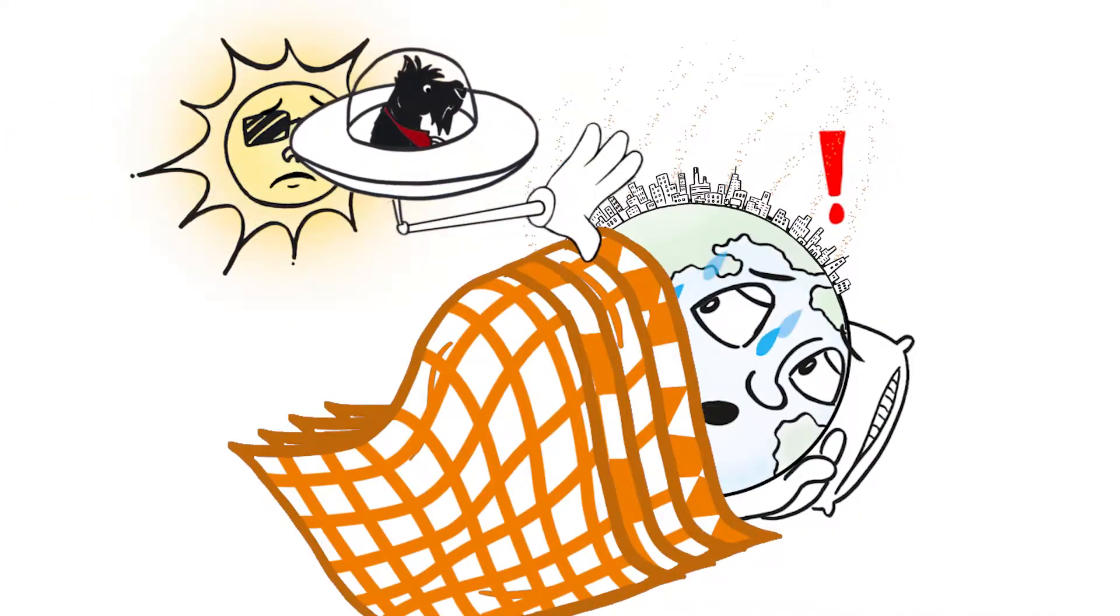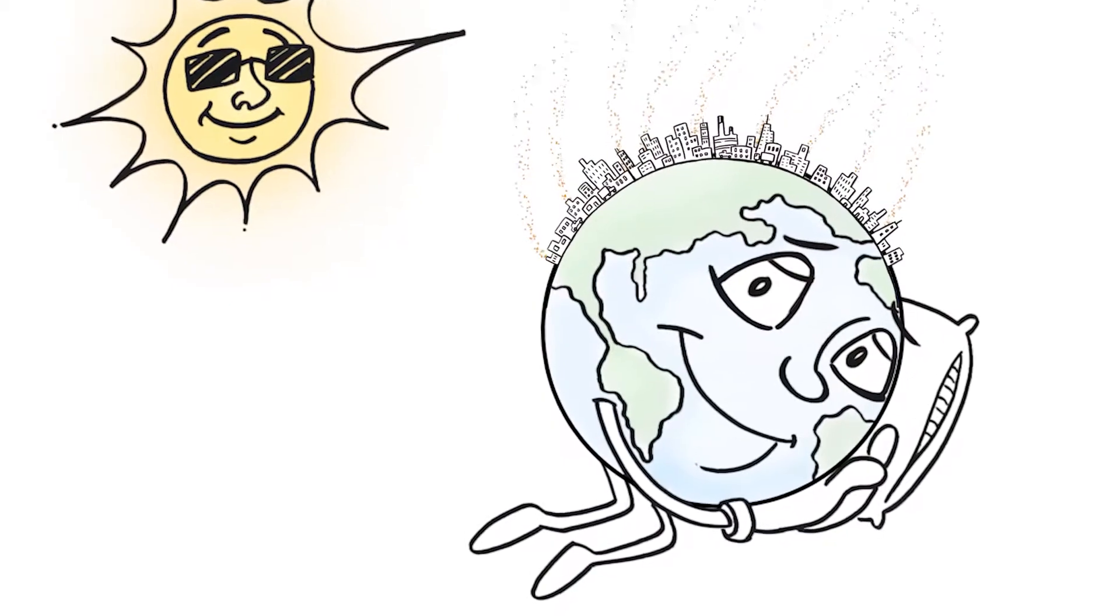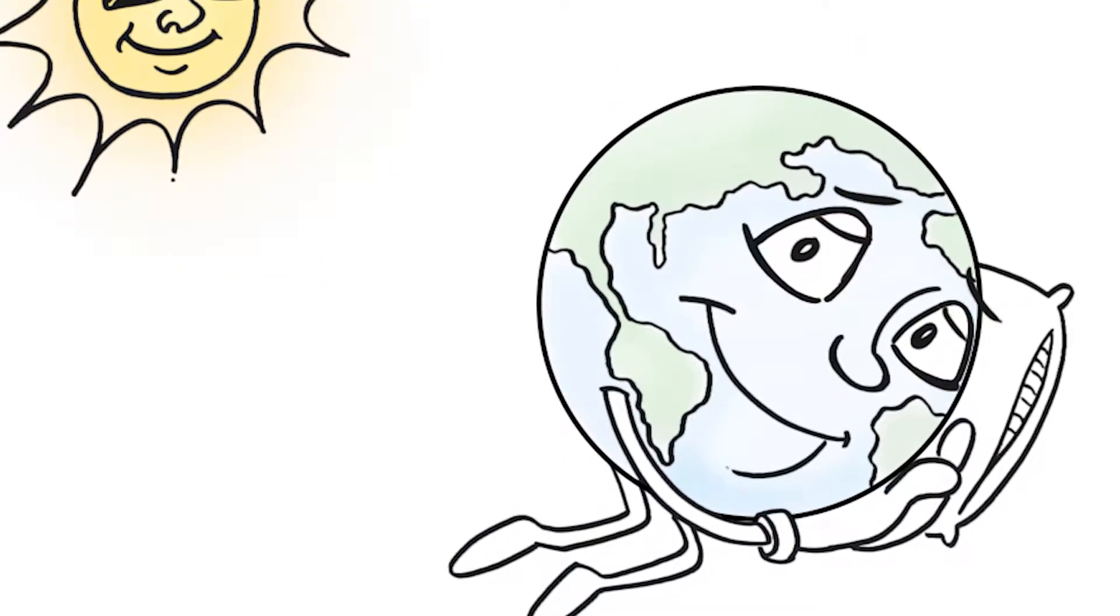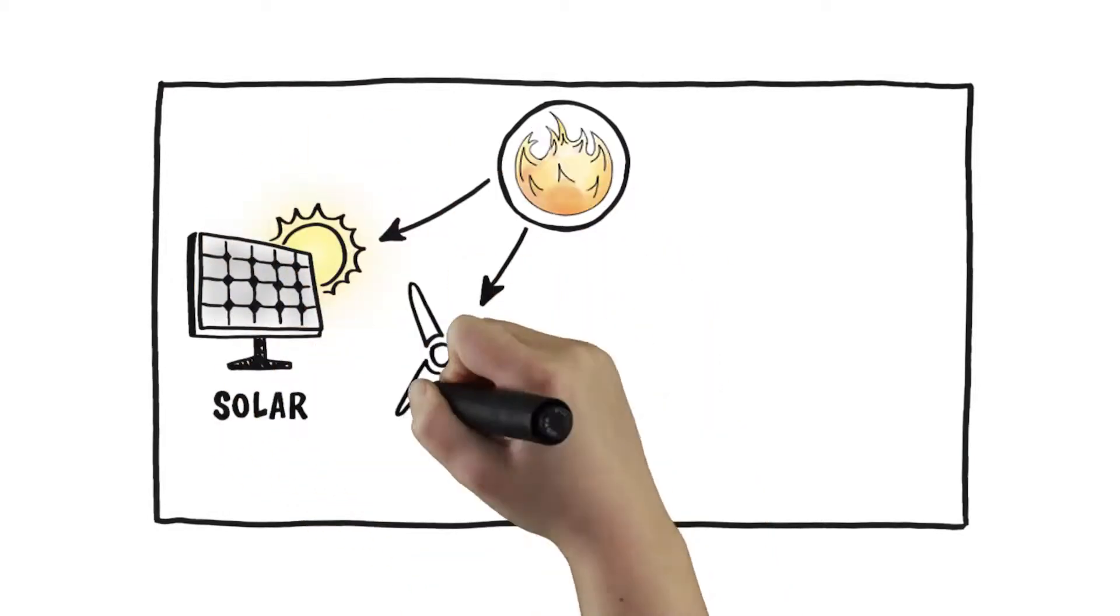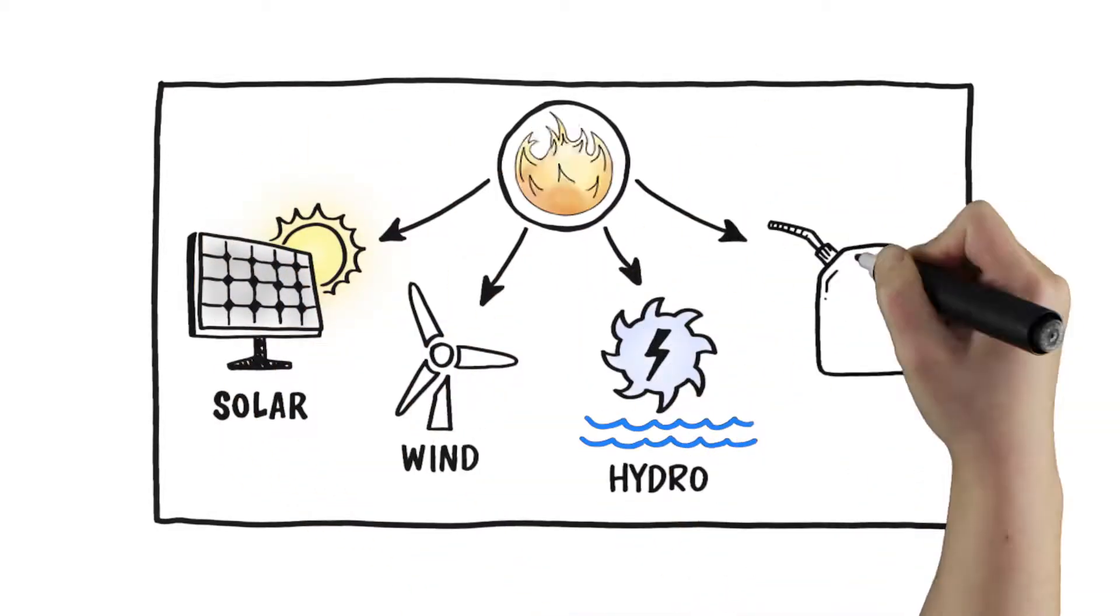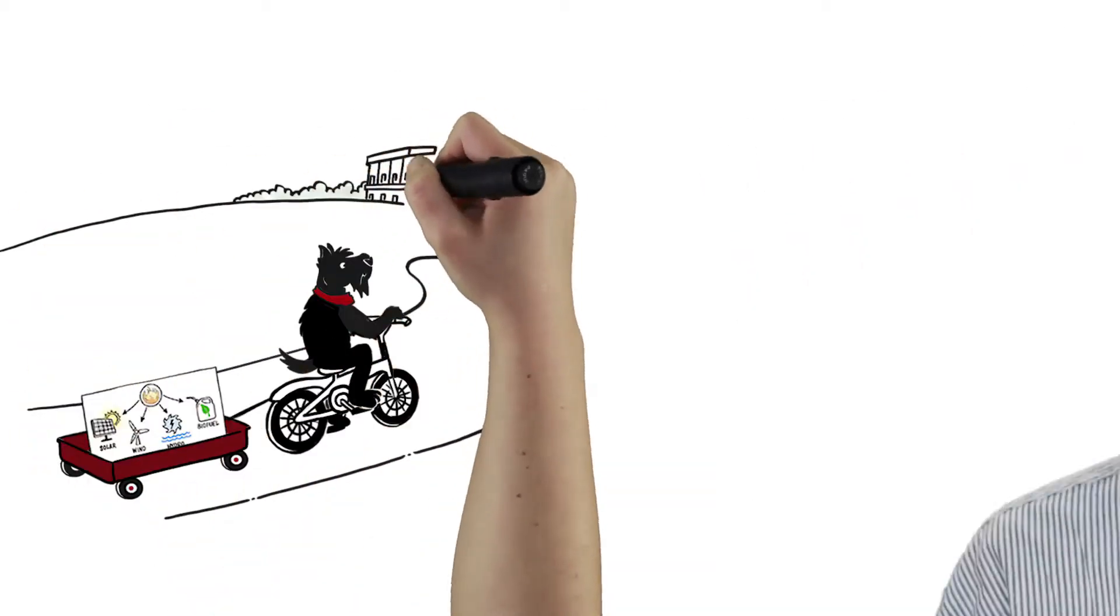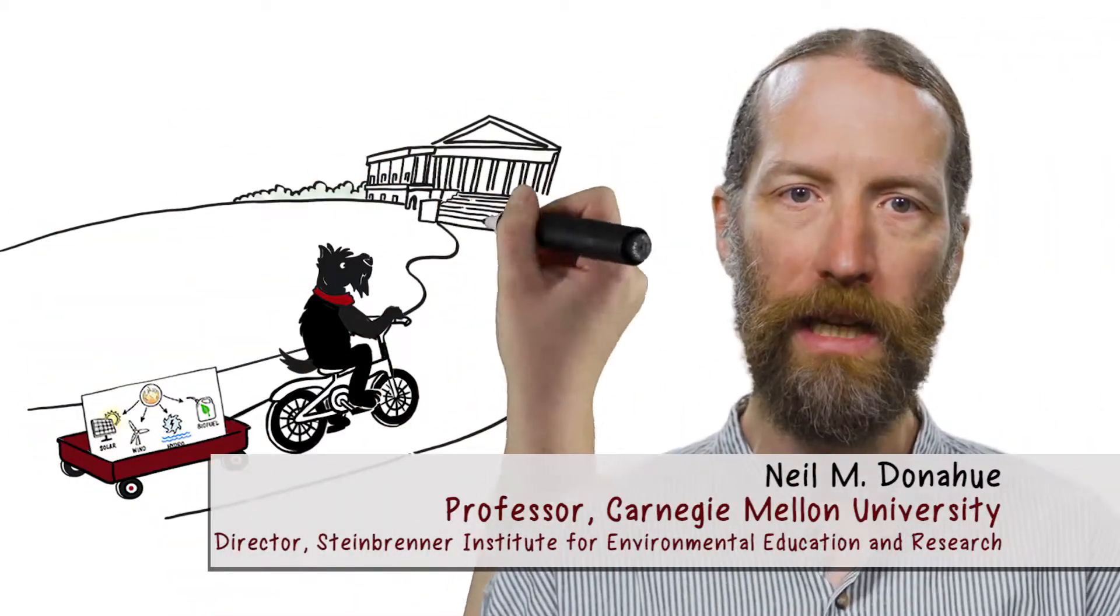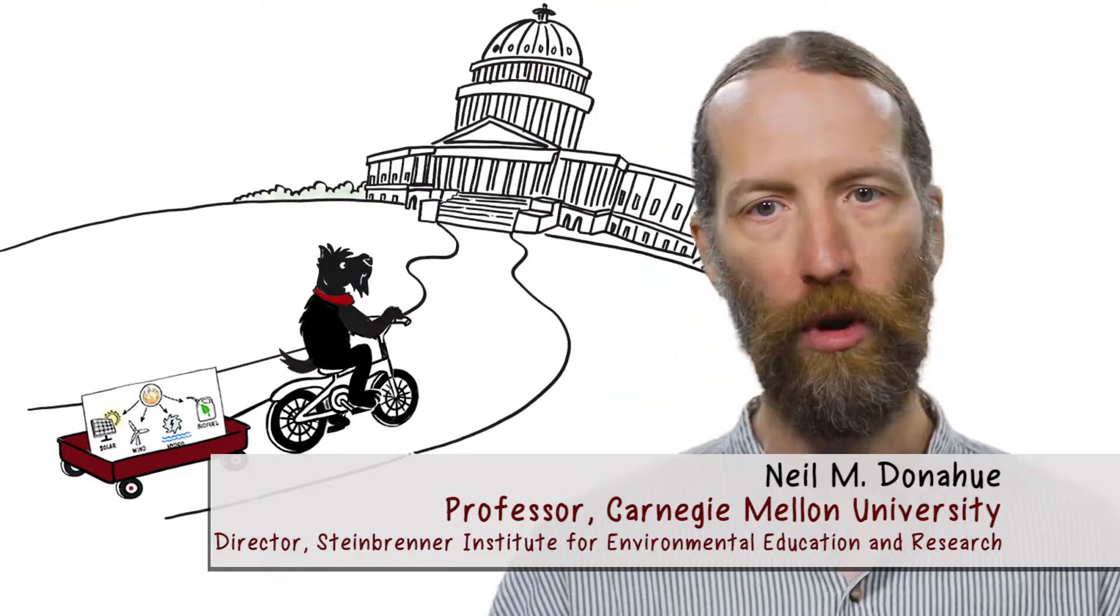Society must figure out how to maintain and raise prosperity around the globe without releasing carbon dioxide into the atmosphere or the ocean. At Carnegie Mellon University, we are working hard to understand the science of climate change, develop new energy technologies, and advise policymakers on how to cost-effectively provide the energy we need while virtually eliminating emissions of carbon dioxide across the globe.